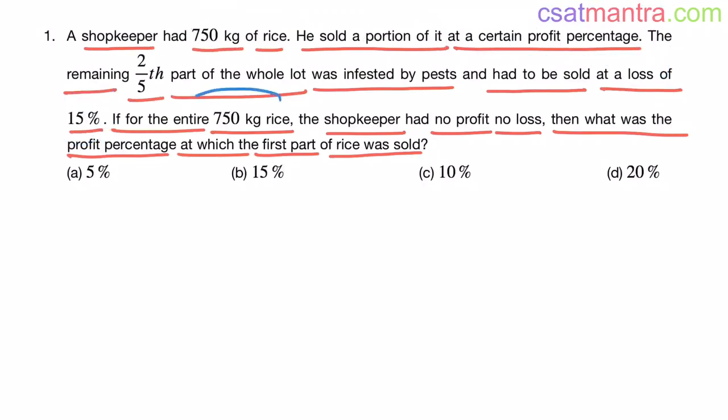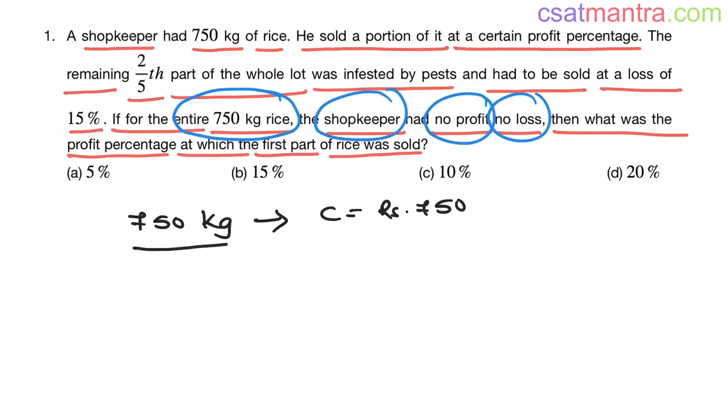Now, here it is said that if for the entire 750 kg rice, the shopkeeper had no profit, no loss. So, I am assuming the shopkeeper bought 750 kg rice at 750 rupees, 1 rupee per kg, my friends. This will make our life easier.